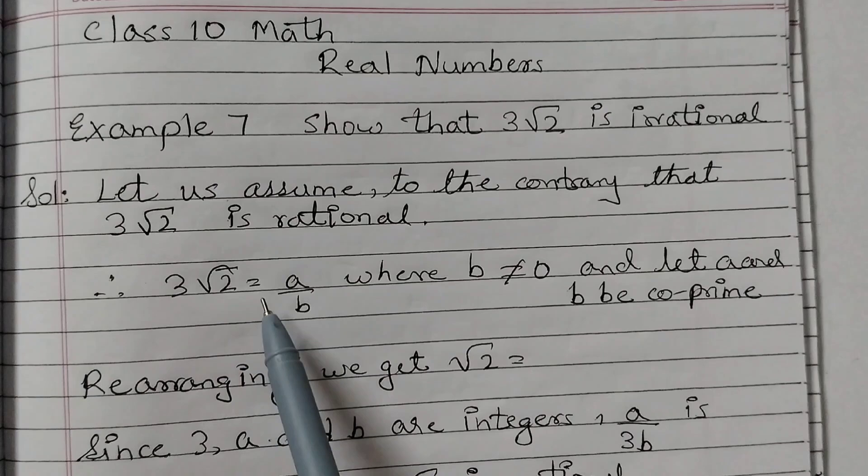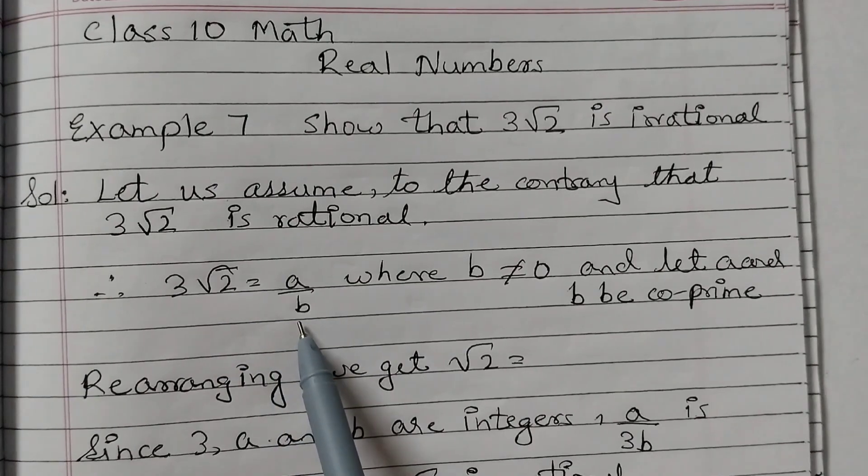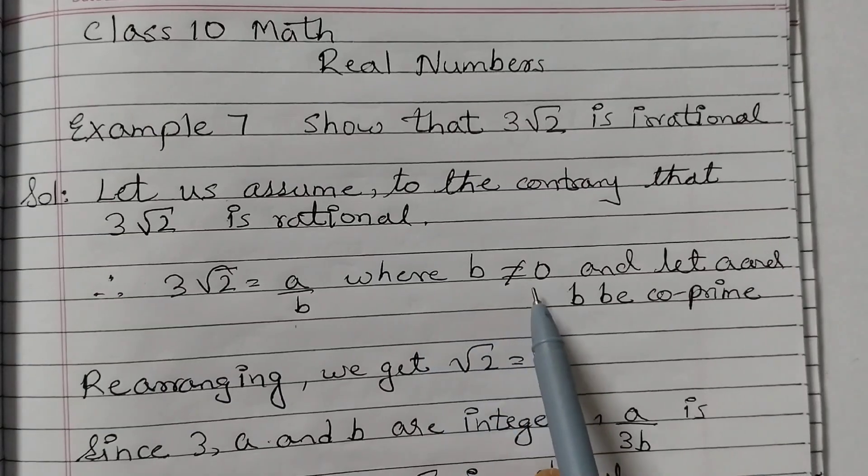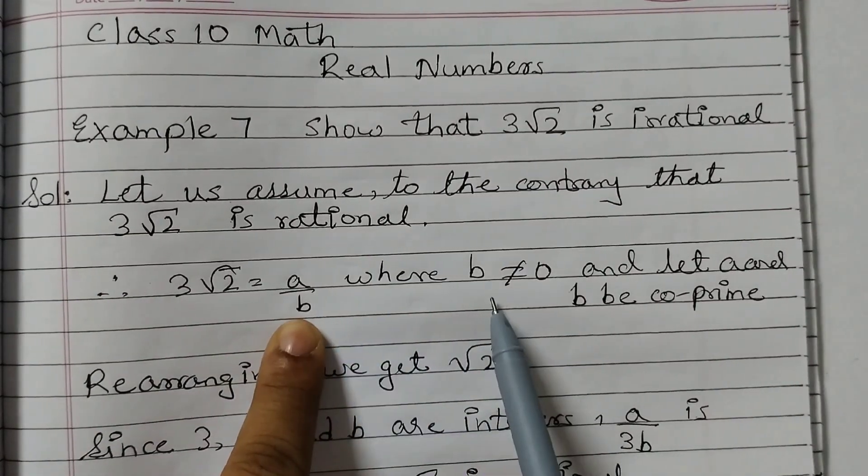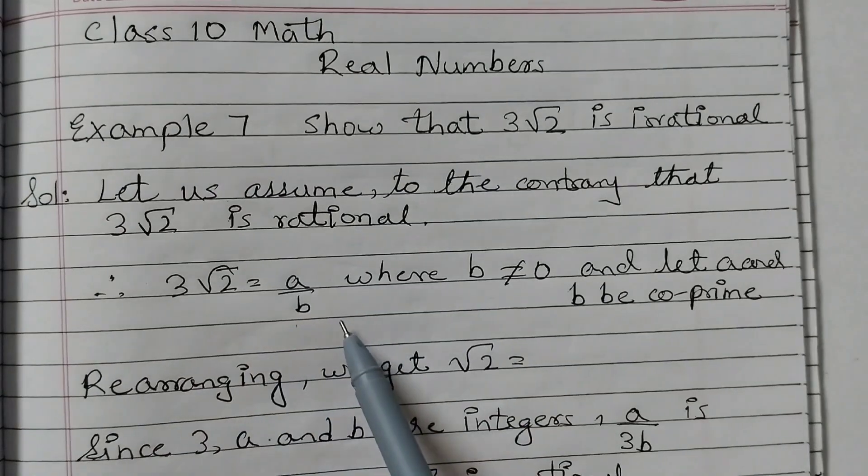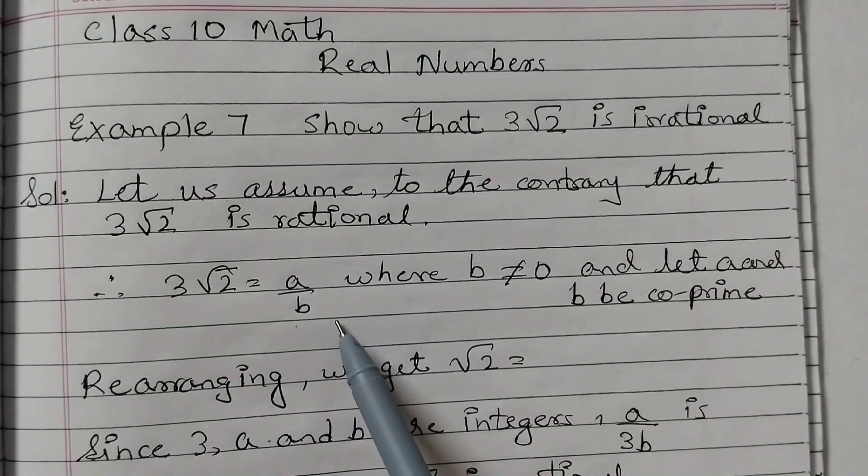Therefore, 3 root 2 is equal to A upon B because any rational number we can write it in the form of P upon Q, where B is not equal to 0. So this condition should be satisfied, B not equal to 0, and let A and B be co-prime numbers which means the only common factor is 1.